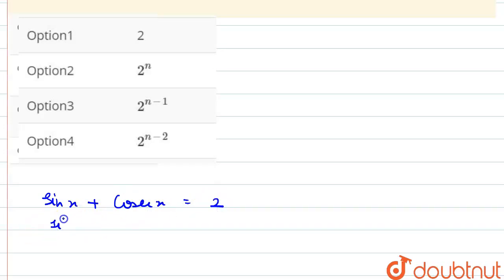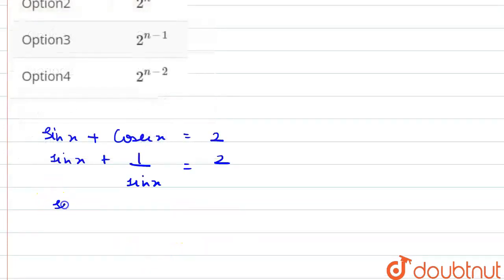Now, we can write this as sin x, and cosec x can be written as 1 upon sin x. Now, this can be written as sin square x plus 1 upon sin x equals 2.